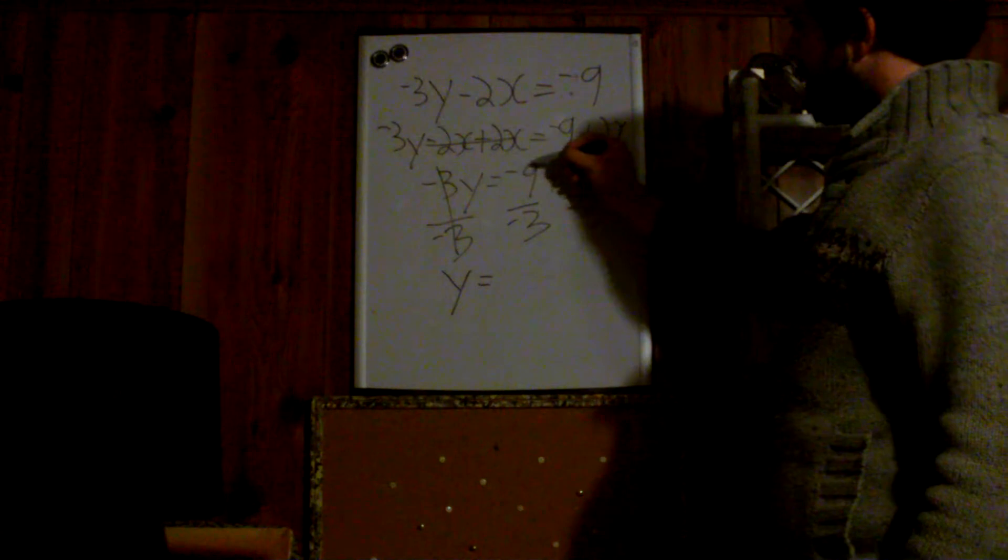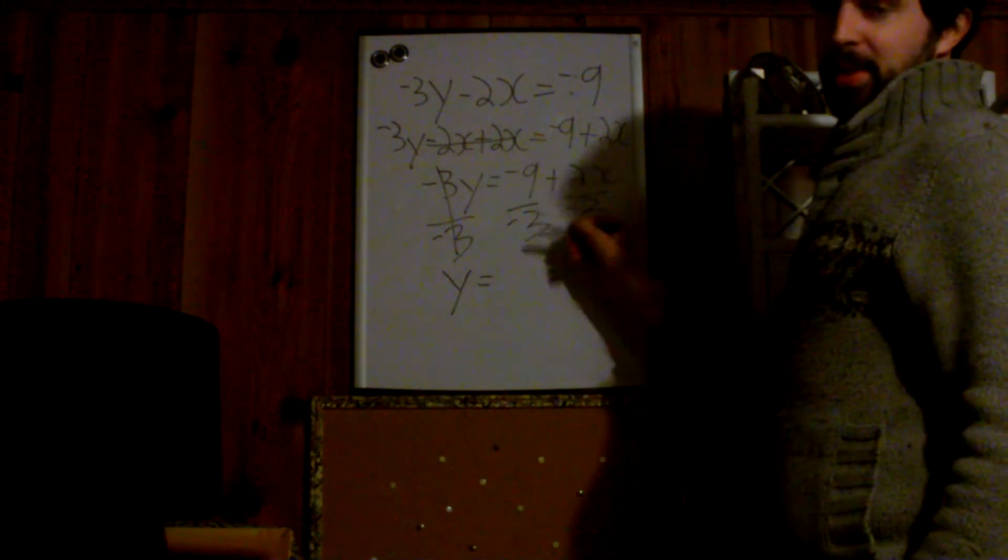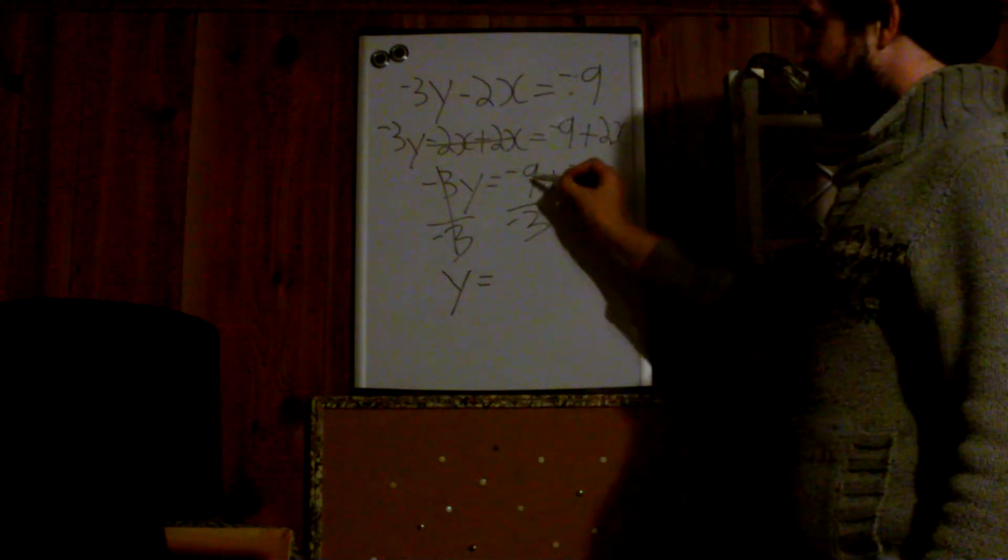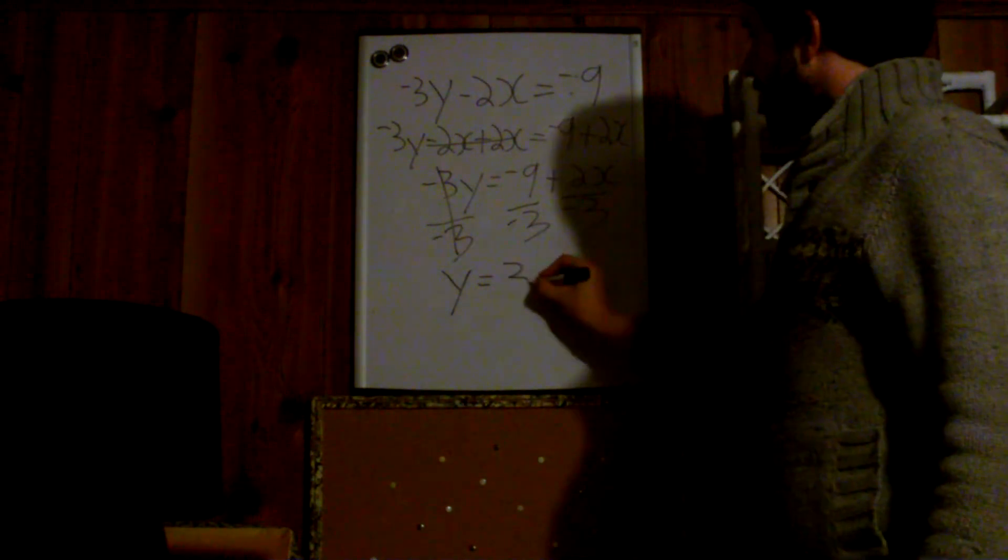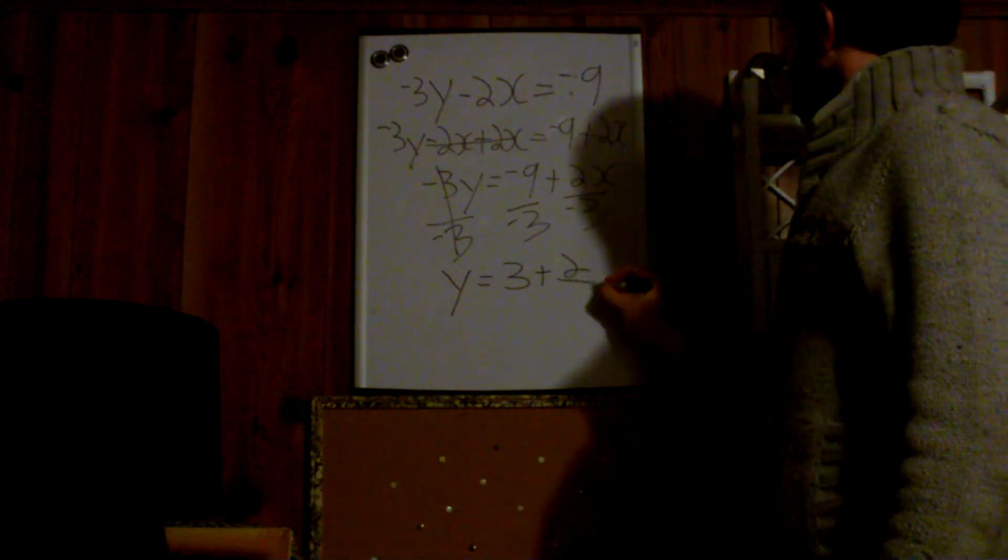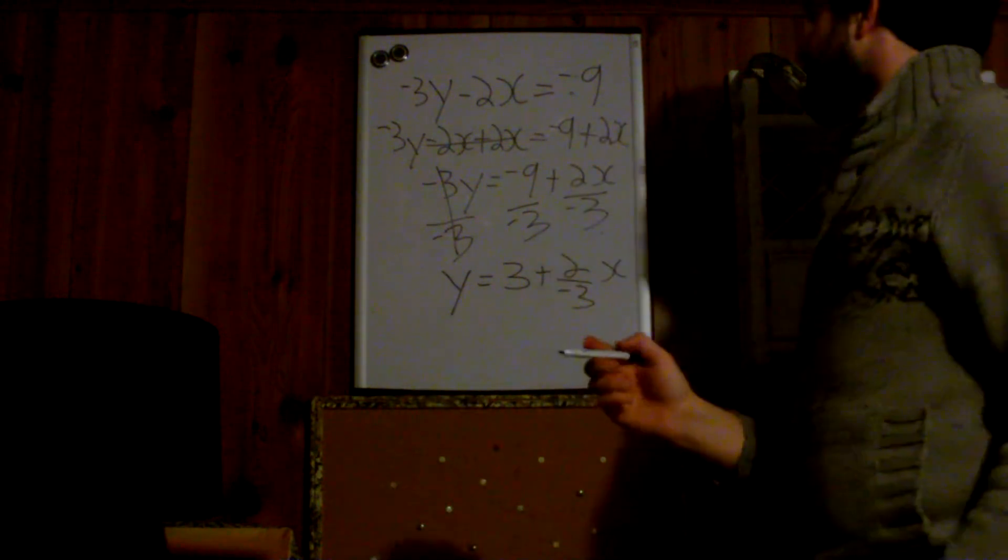So we have a negative 9 divided by a negative 3. A negative divided by a negative gives you a positive. And how many times does 3 go into 9? Three times. And we just break down what was left in our previous step.